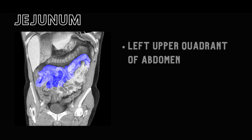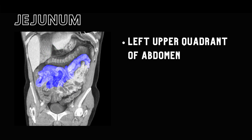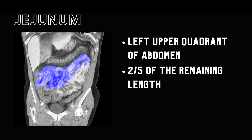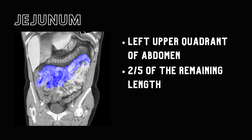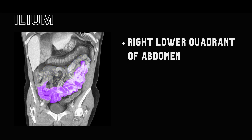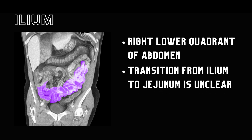The jejunum, in the left upper quadrant, accounts for two-fifths of the remaining length. The ileum, the largest part in the right lower quadrant, lacks a clear demarcation from the jejunum.